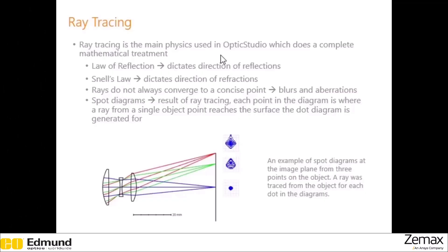In this section, we're going to go a little more in depth into ray tracing. Ray tracing is the main physics used in Optics Studio, which does a complete mathematical treatment. It's a powerful tool to determine parameters of optical systems. Ray tracing by hand is extremely laborious and skill intensive, so it's good we have programs like Optics Studio to do it for us.